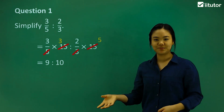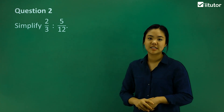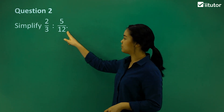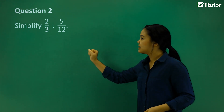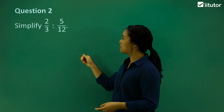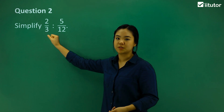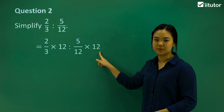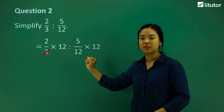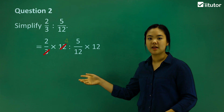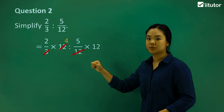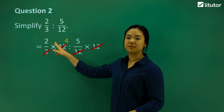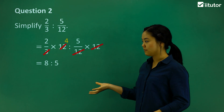Let's do another one to get used to it. We want to simplify 2 thirds to 5 over 12. Again, find the common multiple of 3 and 12, which is 12. So we times both sides by 12 — 2 thirds times 12, and 5 twelfths times 12. We cross out the 3 (12 divided by 3 is 4), and we cross out the 12 and 12 since they're the same — that's 1 and 1. That becomes 2 times 4 to 5, which is 8 to 5. That's the simplified ratio.